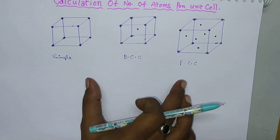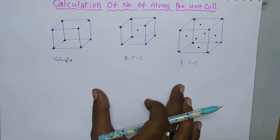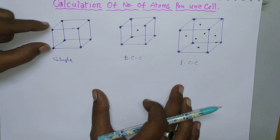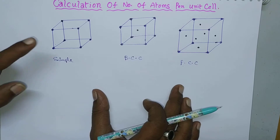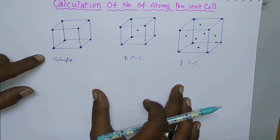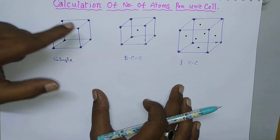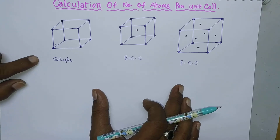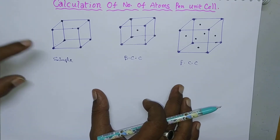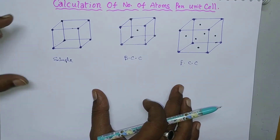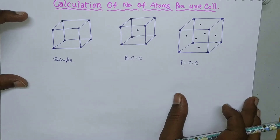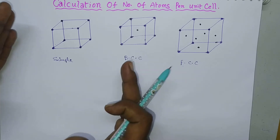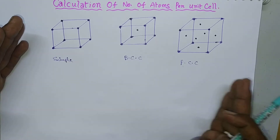Now we have to calculate the number of atoms present per each unit cell. It may seem there are eight atoms in a simple cube, but really those eight atoms are not entirely present within one unit cell. In any crystal lattice, an infinite number of unit cells join together in a regular three-dimensional arrangement.